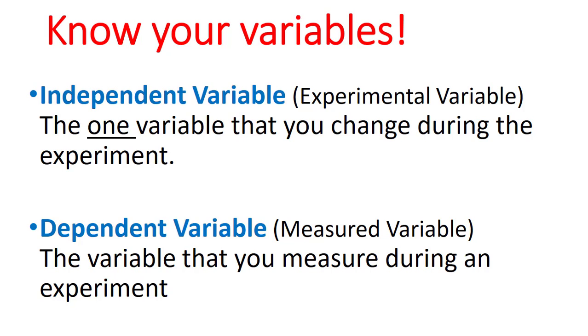Secondly, our dependent variable, sometimes known as our measured variable, and this is the variable that we're going to measure during the experiment. And it's good to think of this one as something that has units attached to it, whether it's centimeters or grams, so that we know we're actually measuring it.